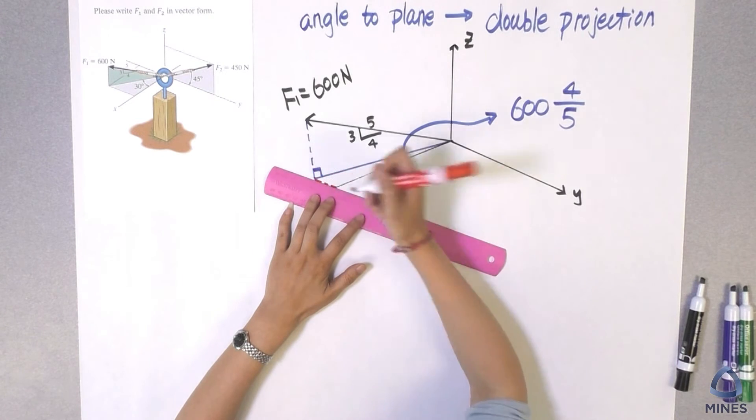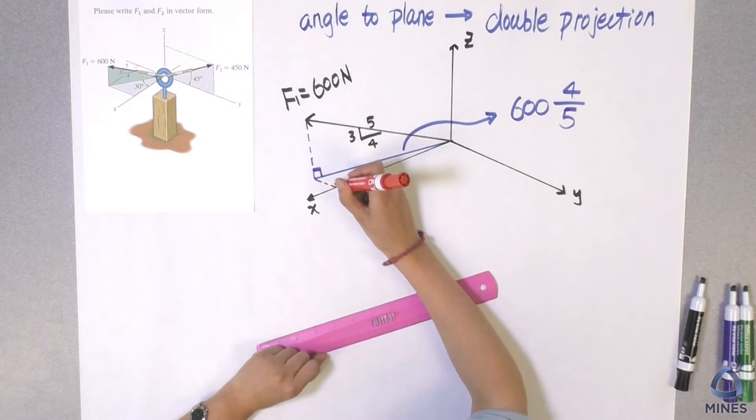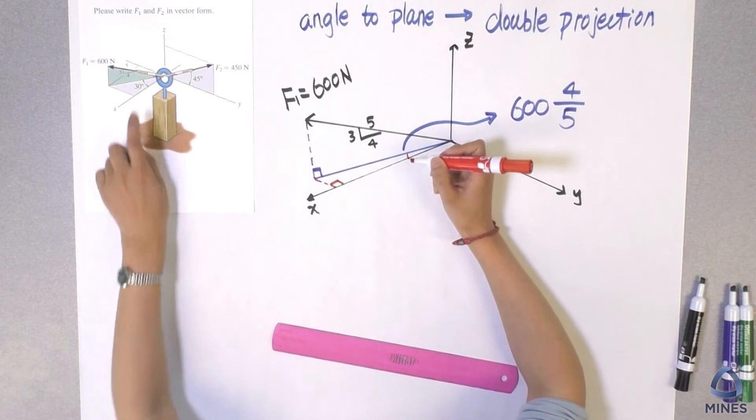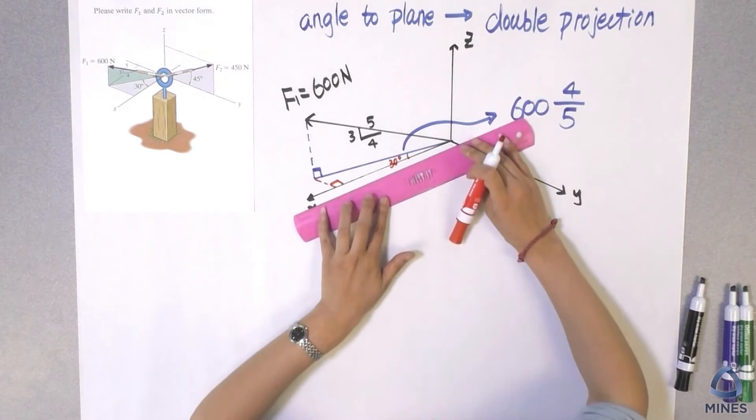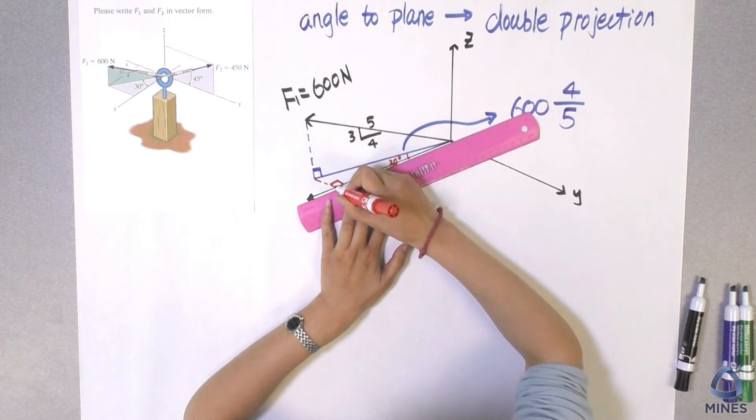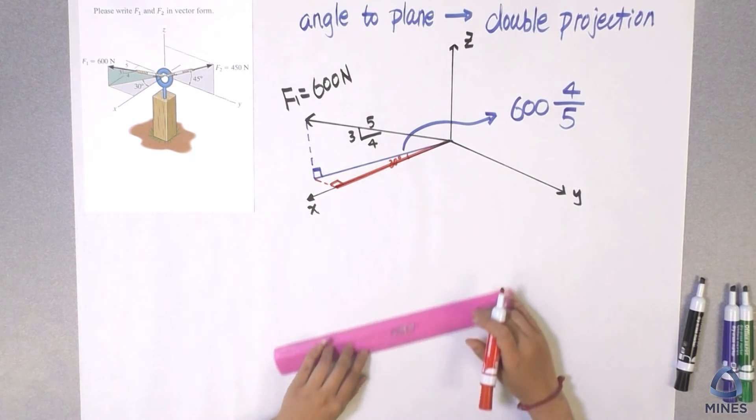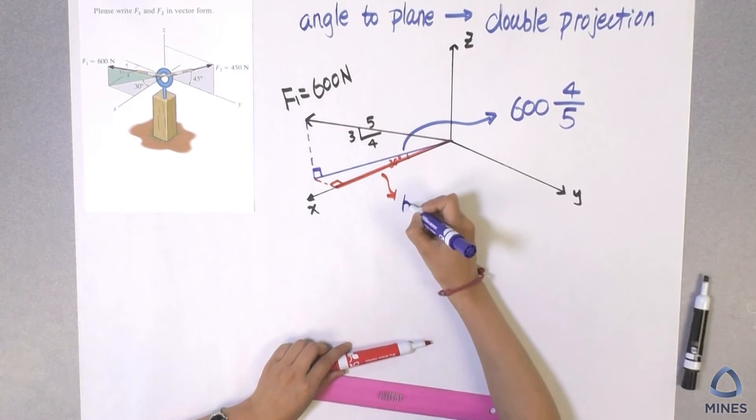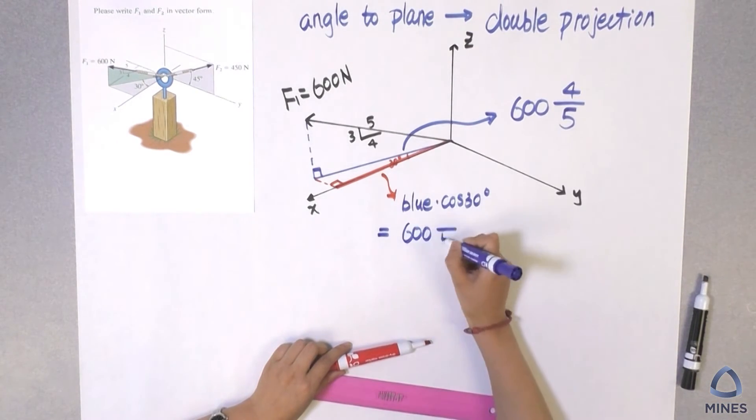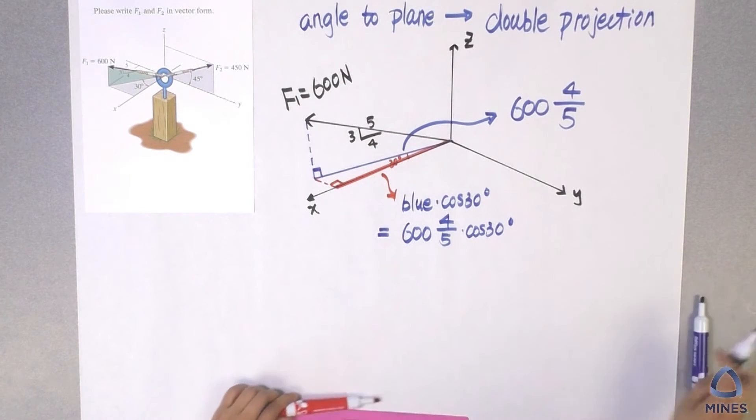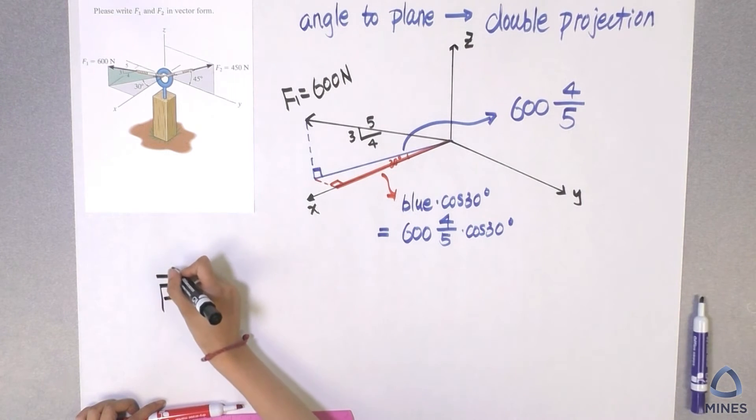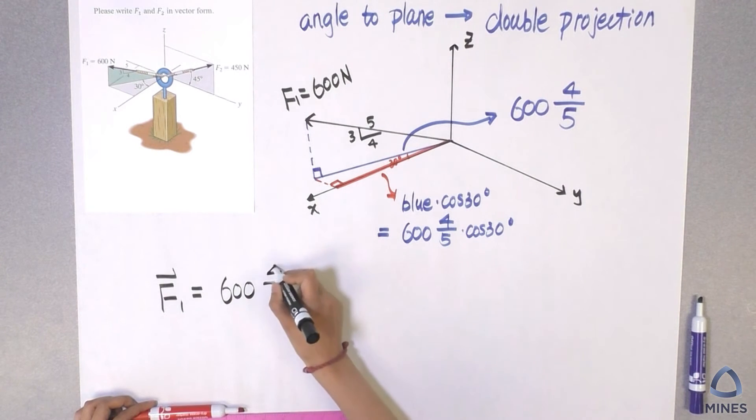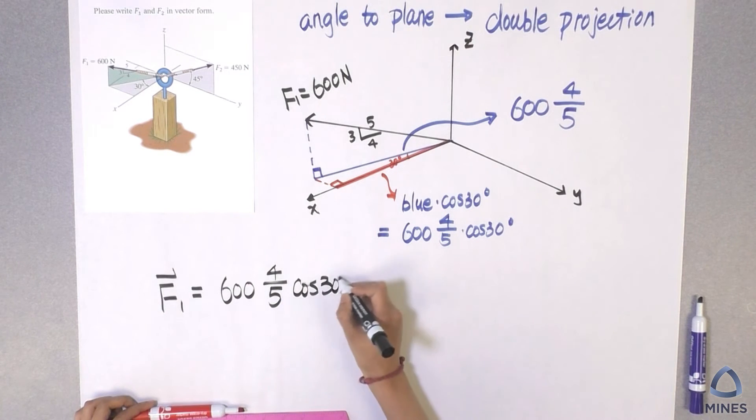So now let's see, if I try to draw a line parallel to the Y axis, we can see X and Y is always perpendicular, right? So now what's this angle? From the picture, we can see this is 30 degree. And let's take a look at here. What is the red line I am showing here? That's going to be the X component. So now what is the value for the red line here? It will be the blue line, the hypotenuse multiplied by cosine 30. So which means if we were trying to write F1 in the vector form, the i hat will be 600, 4 over 5, cosine 30 degree i hat.